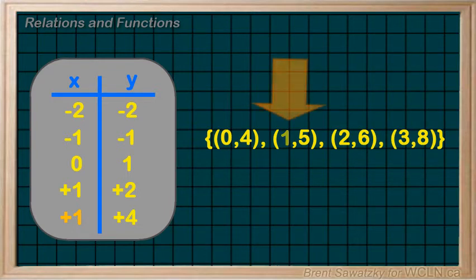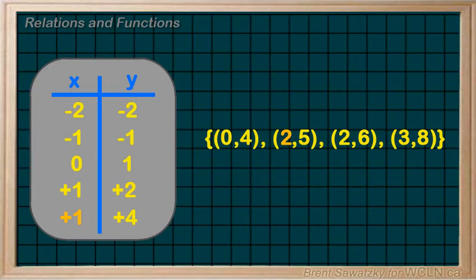But what if we change this value to 2? Now we have x equals 2 twice, and each x-value has a different y-value. We know that to be a function, we're limited to only one y-value for any x-value. Thus, we would conclude that this relation is no longer a function.